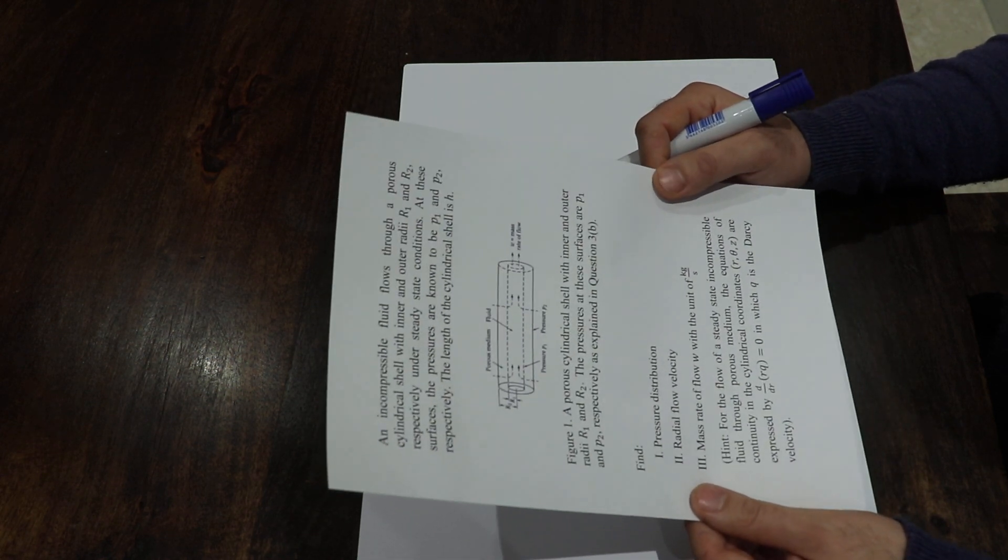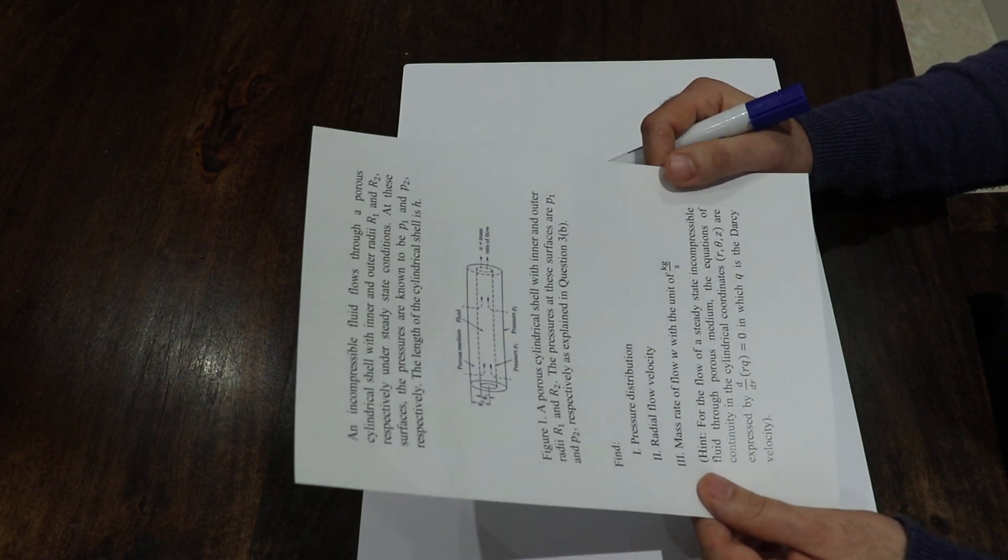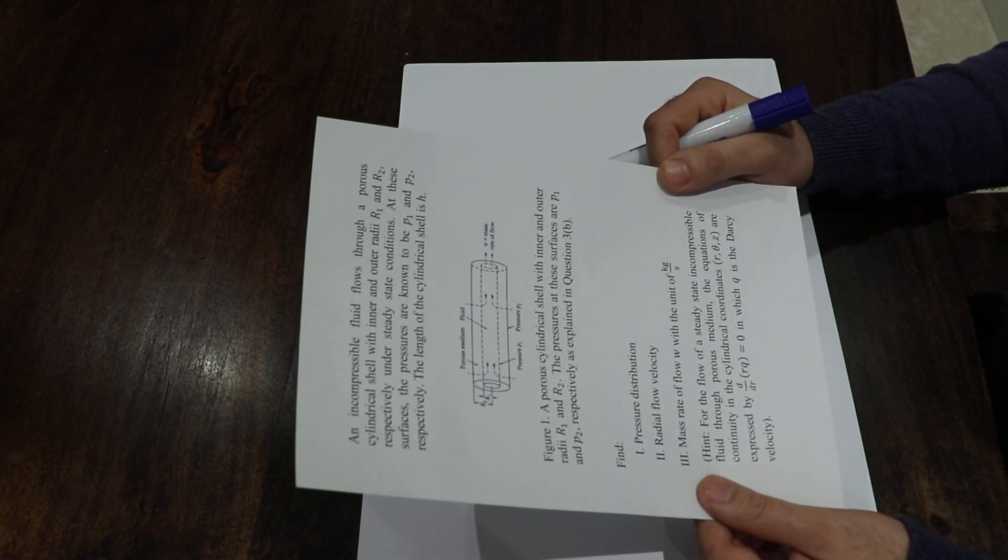Find: (1) pressure distribution, (2) radial fluid velocity, and (3) mass rate of flow W with the unit of kilogram per second.